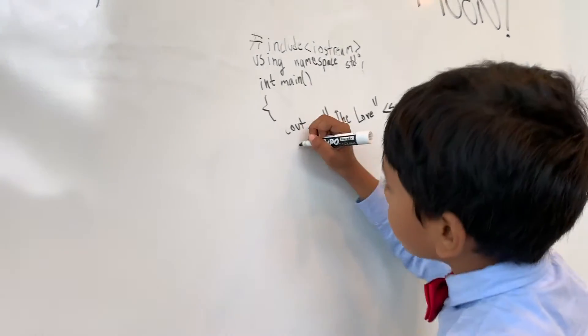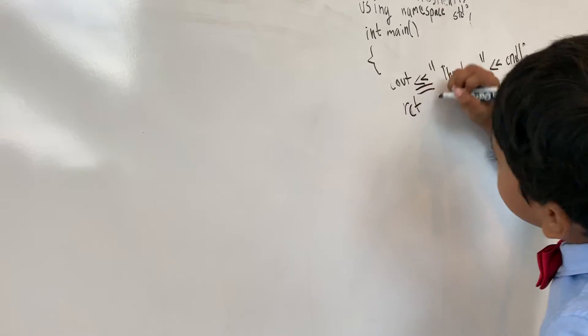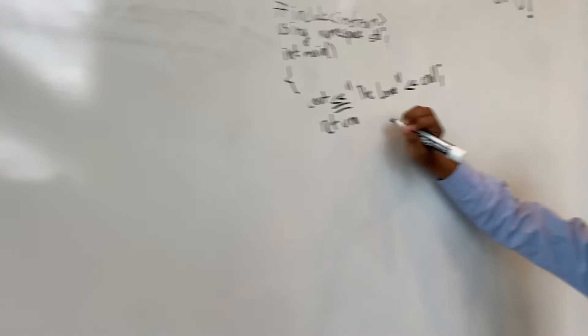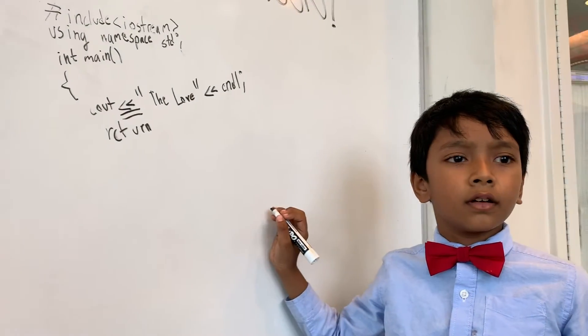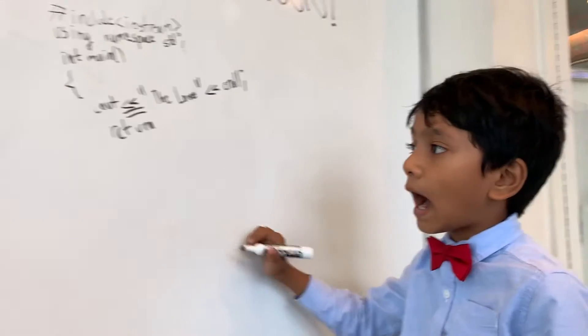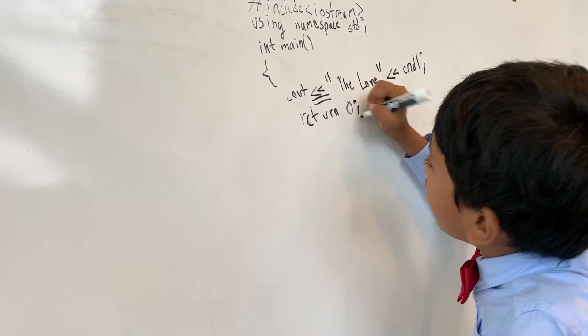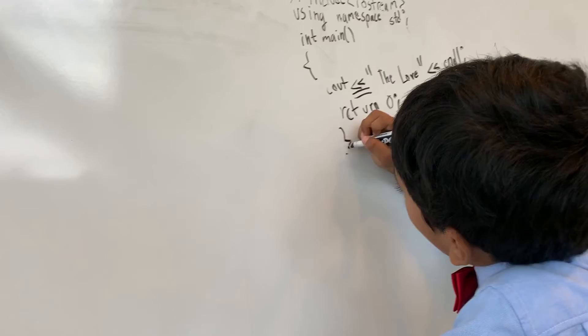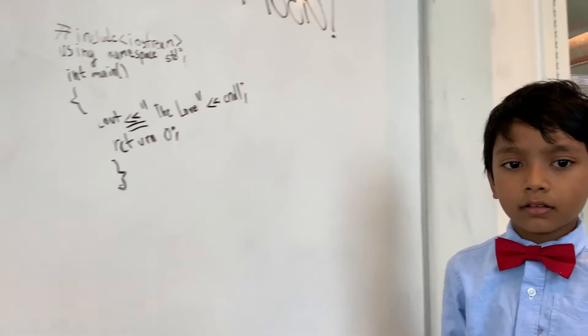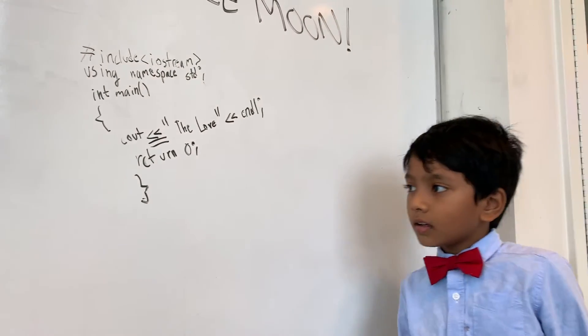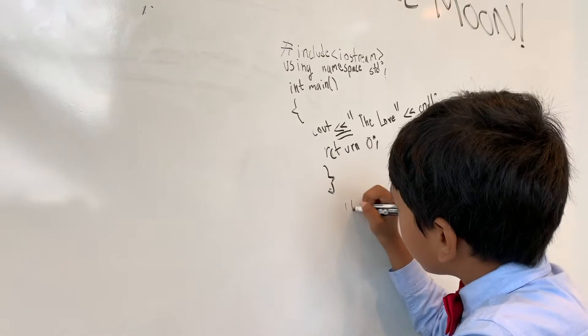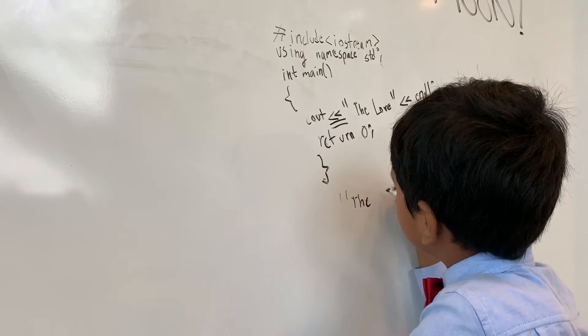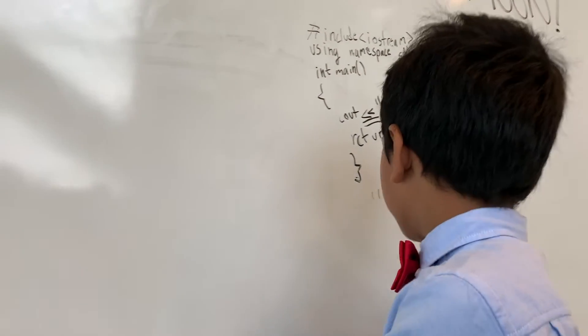Then, return zero is another regulation for the program to compile it, and then close the body of the function, and the output you should get is the love if you write this piece of code.